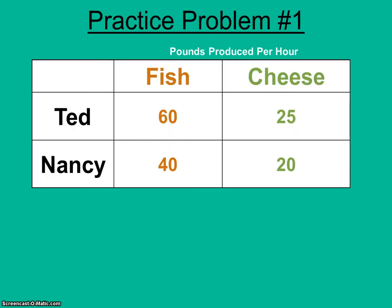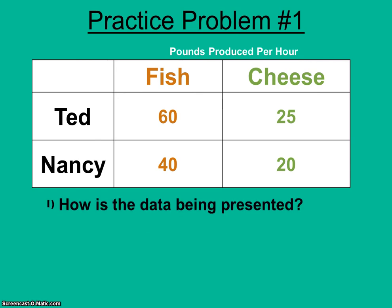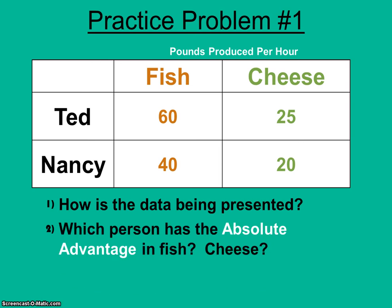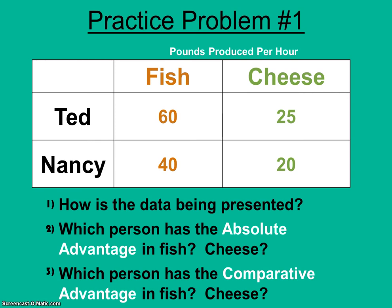I have a couple of practice problems for you to try, and we'll go over the answers in class. For practice problem number one, the first thing to think about is how the data is being presented — what is varying? Because depending on whether inputs or outputs vary, you'll set up your fractions differently when calculating comparative advantage. Here we have pounds of fish or cheese produced in one hour of time, so the inputs are constant and the output is varying — this problem is set up just like the Sarah and Rob example. Figure out who has the absolute advantage in fish and cheese production, then do the math to find the comparative advantage.